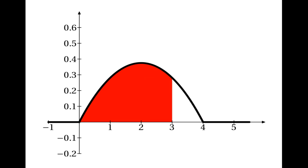If we look at the graph of the probability density function, then the probability that x is less than or equal to 3 is this area here — the area underneath the graph up to x equals 3. So F of 3 is this area, the area under the graph of the probability density function up to x equals 3.